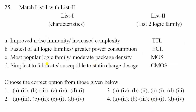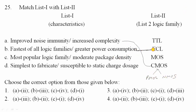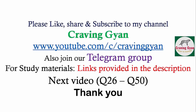Question 25: Match the logic families. CMOS offers improved noise immunity but increased complexity, using both PMOS and NMOS transistors. ECL (Emitter Coupled Logic) is the fastest logic family but has high power dissipation. TTL (Transistor-Transistor Logic) is the most popular with moderate package density. MOS is simplest to fabricate but susceptible to static charge damage. Option 3 is correct.